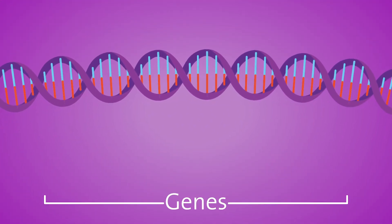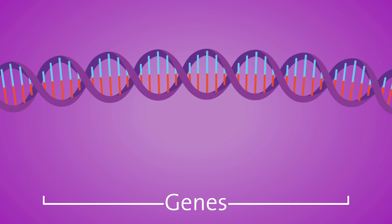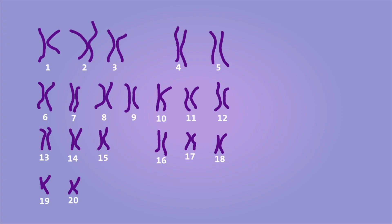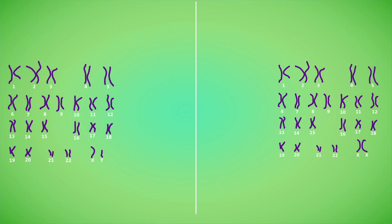Our body needs this information to learn how to develop and function normally. There are 23 pairs of chromosomes for a total of 46. Half come from our mother and half come from our father.